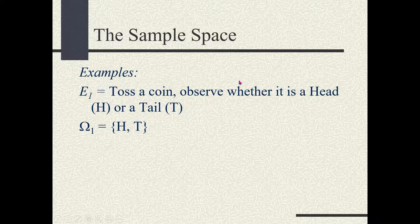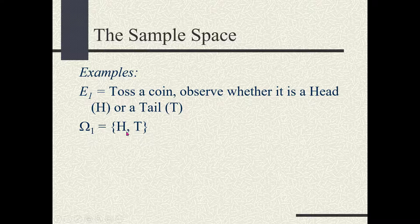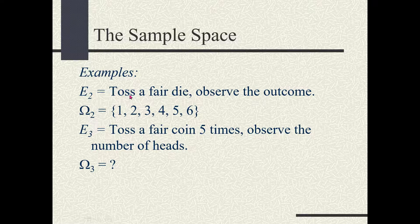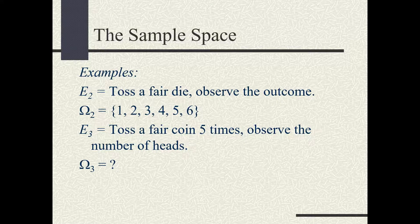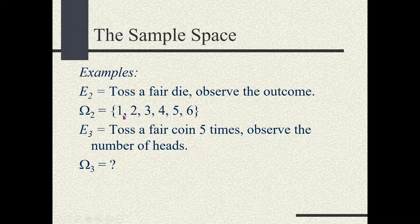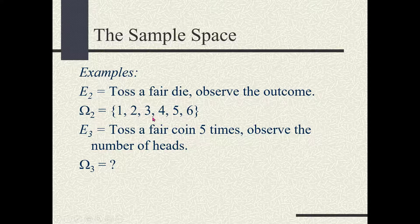If you toss a coin, your sample space is written as {Head, Tail} — outcomes are separated by commas and enclosed in curly brackets. If you toss a fair die, there are six possible outcomes. Many of you might have played ludo, so you know that tossing a fair die can give you one, two, three, four, five, or six. The sample space is {1, 2, 3, 4, 5, 6}.